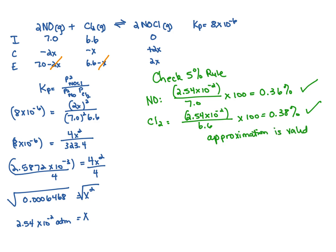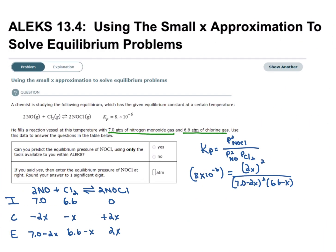Now we can solve for the equilibrium pressure of NOCl. At equilibrium, the pressure equals 2x. Rounding to one significant digit, the equilibrium pressure of NOCl is 0.05 atm. Going back to the first question asking if we can predict the equilibrium pressure, we would say yes, and our final answer to one significant figure is 0.05 atm.